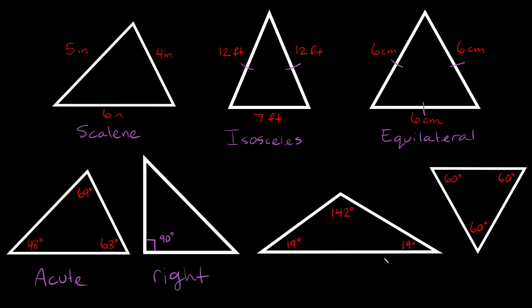Now let's look at this one over here. We have two small angles — 19 degrees and 19 degrees — and then one big angle of 142 degrees. Remember, an angle that is bigger than 90 degrees is called an obtuse angle. So if you ever have a triangle that has an angle bigger than 90 degrees, that's called an obtuse triangle.